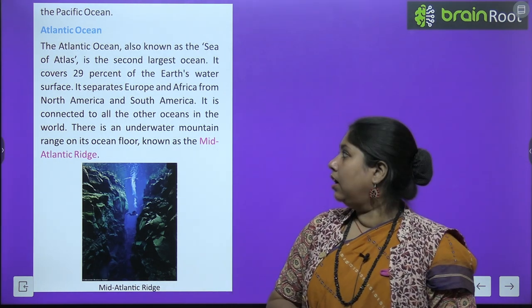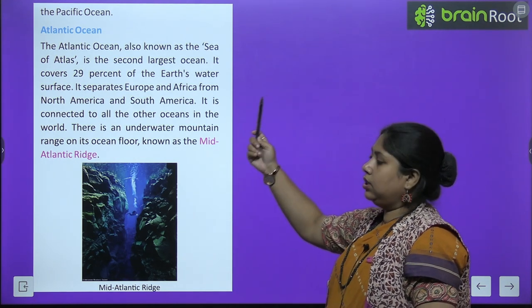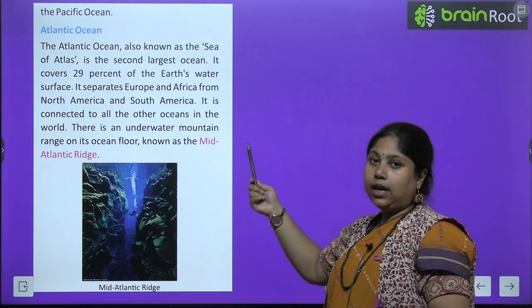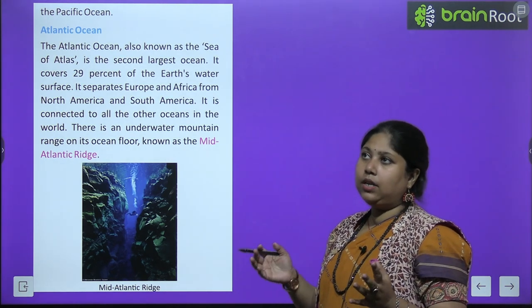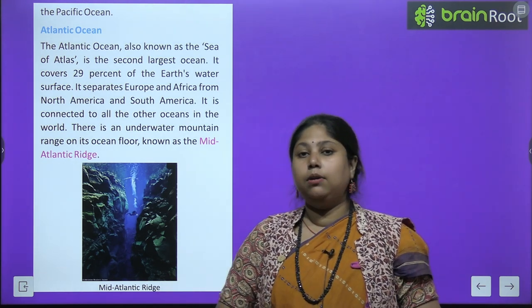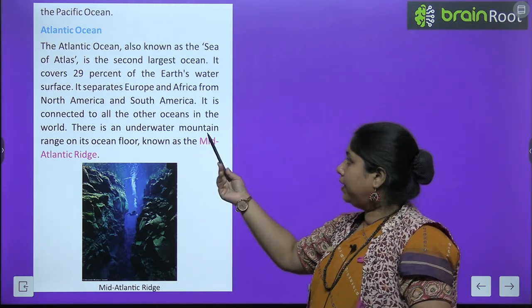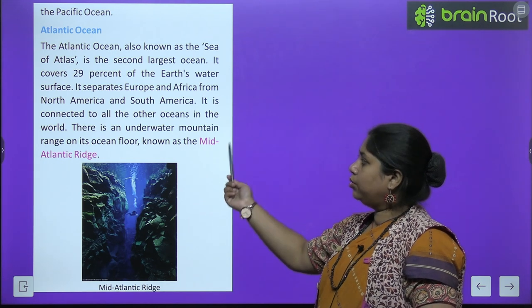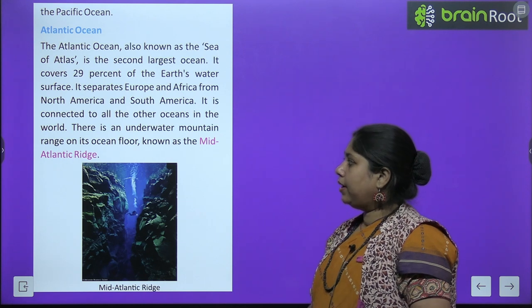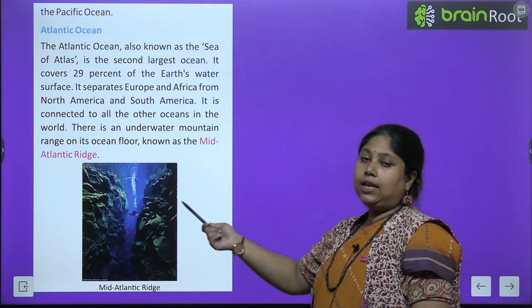The Atlantic Ocean is also known as the Sea of Atlas. It is the second largest ocean and covers 29% of the earth's surface.